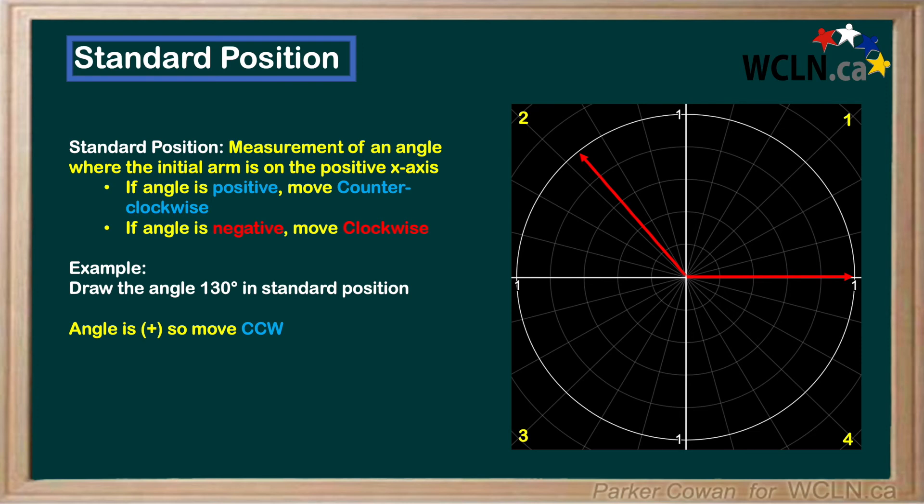Thus, if we want to represent 130 degrees, we just need to find a number that adds to 90 degrees to make 130. In this case, that's 40 degrees.